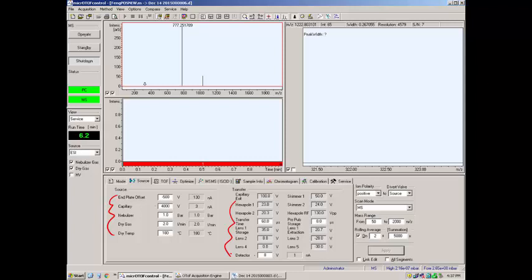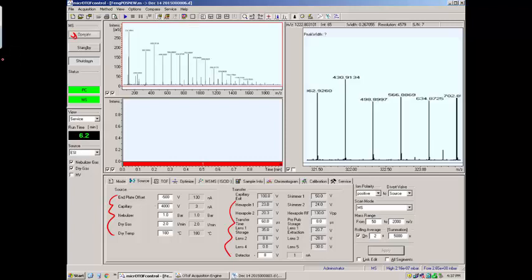Besides entering a file name, all you've got to do is turn the instrument on. So you click Operate, and if our sample is flowing into the instrument, you'll start to see a mass spectrum. You can save this for any period of time, and then we can process the data from there.